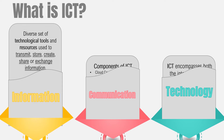How do we create information? Creating information is dependent on the desired output to generate. For instance, if you will create a video, you may use a mobile device or a camera, as well as video editing software. If we want to create an infographic, we may use a laptop or desktop computer with an installed program.